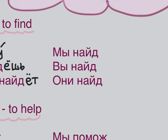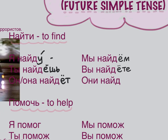МЫ НАЙДЁМ — stress falls on Ё. ВЫ НАЙДЁТЕ — a bit of a yeti situation with two dots. ОНИ НАЙДУТ — stress on У. So: Я НАЙДУ, ТЫ НАЙДЁШЬ, ОН НАЙДЁТ, МЫ НАЙДЁМ, ВЫ НАЙДЁТЕ, ОНИ НАЙДУТ.